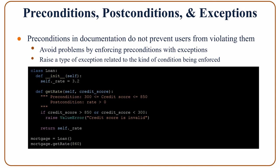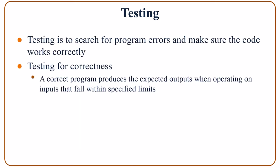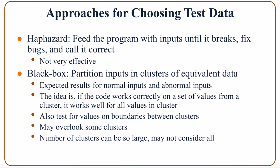Testing is essentially searching for program errors to make sure the code works correctly. Testing for correctness means that if we feed the method with inputs that fall within specified limits, a correct program would produce the expected outputs. We discussed three approaches for choosing test data. The hypothesis approach means we feed the program with inputs until it breaks, then fix the bugs and call it correct — however, this approach is not very effective.